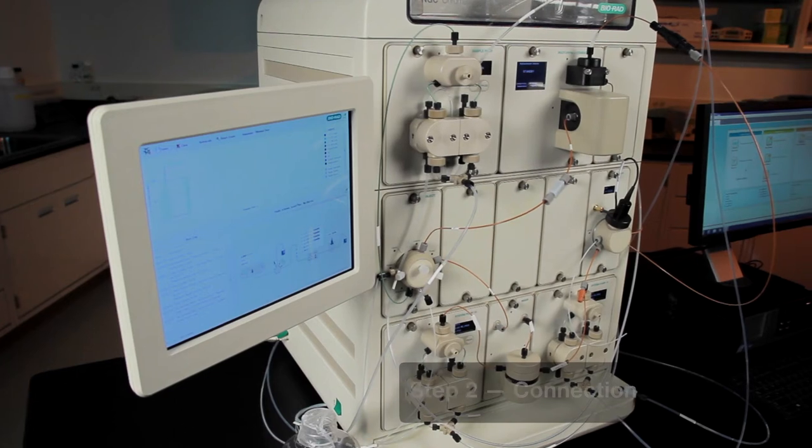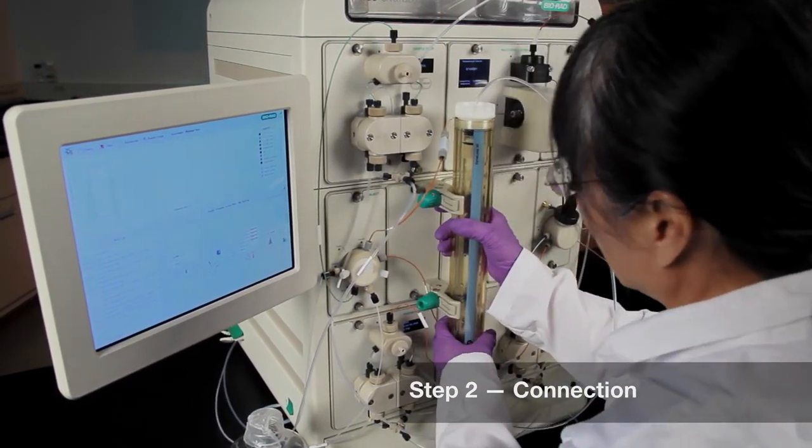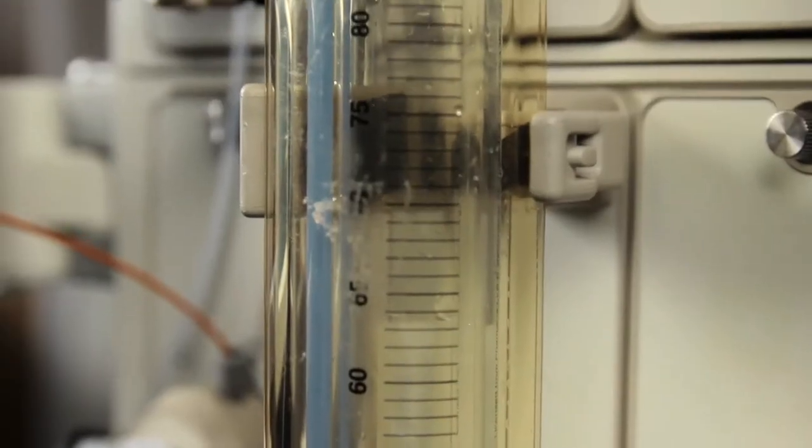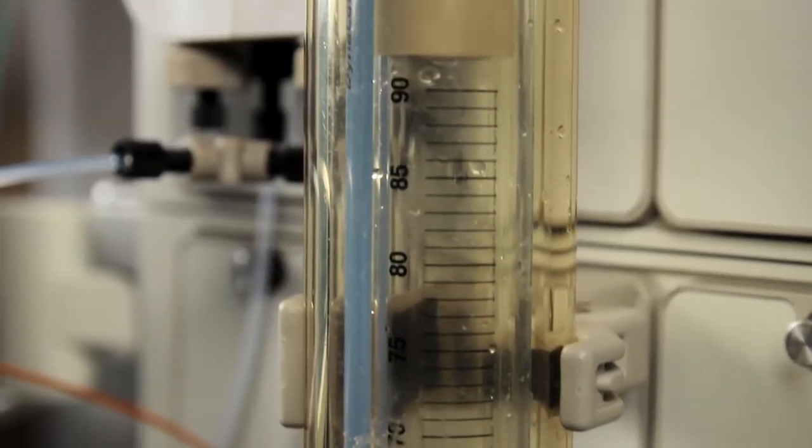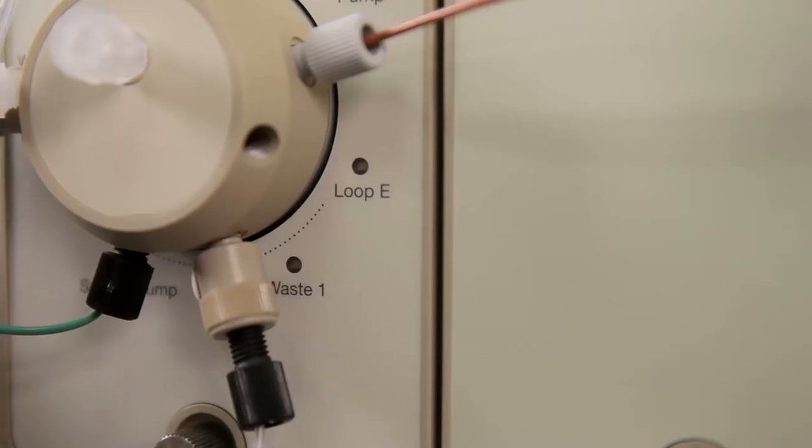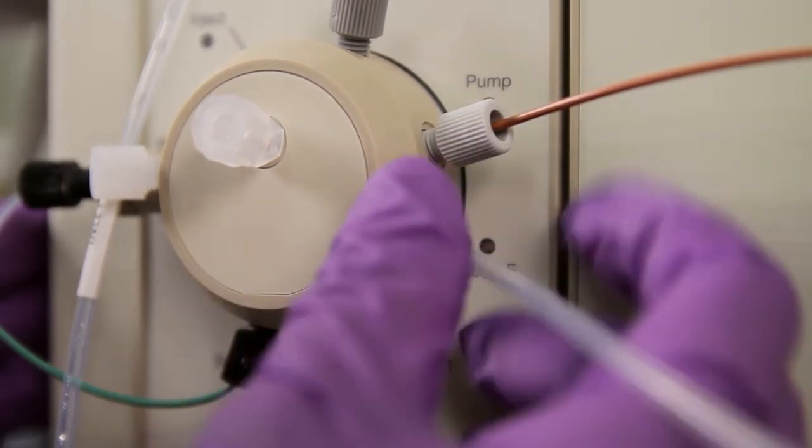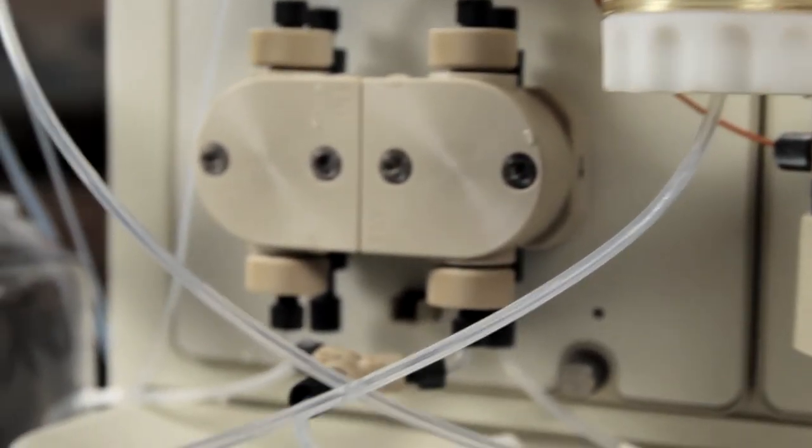For Step 2, we will connect and prime the Dyna Loop using the NGC system. The NGC should be primed with buffer and water. Assemble the Dyna Loop so the sliding seal is at the higher volume mark and attach to Loop E of the injector. Leave the 0 mil end free to waste.